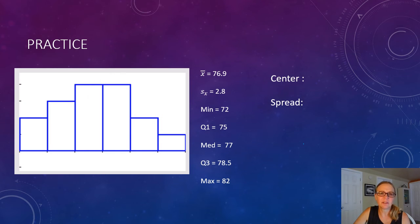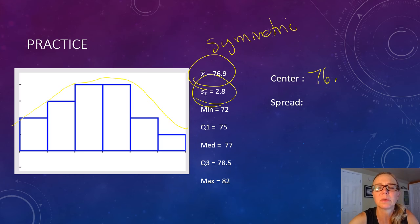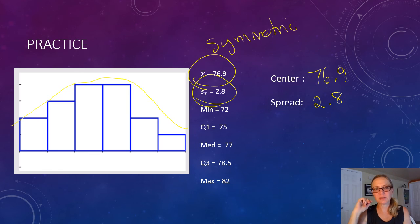In this example, I've given you a histogram, and this histogram represents data that's pretty evenly distributed, so I would call this a symmetric distribution. Because it's symmetric, we want to use the mean and the standard deviation. So our center would be 76.9, and our spread would be 2.8. So for symmetric data, we use mean and standard deviation, and for non-symmetric data or data with outliers, we use median and IQR.